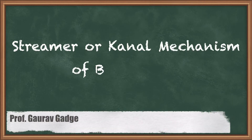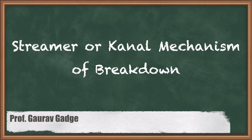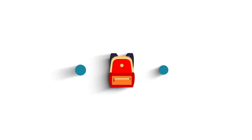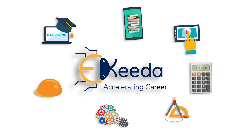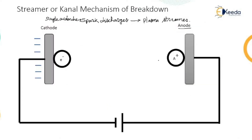Hello friends, today we are going to study our next topic related to high voltage engineering — that is the streamer or canal mechanism of breakdown. We have already studied one method called the Townsend breakdown criteria. There is a difference between the Townsend criteria and the streamer mechanism of breakdown. The streamer theory says there is a single avalanche which is sufficient to form a spark discharge.